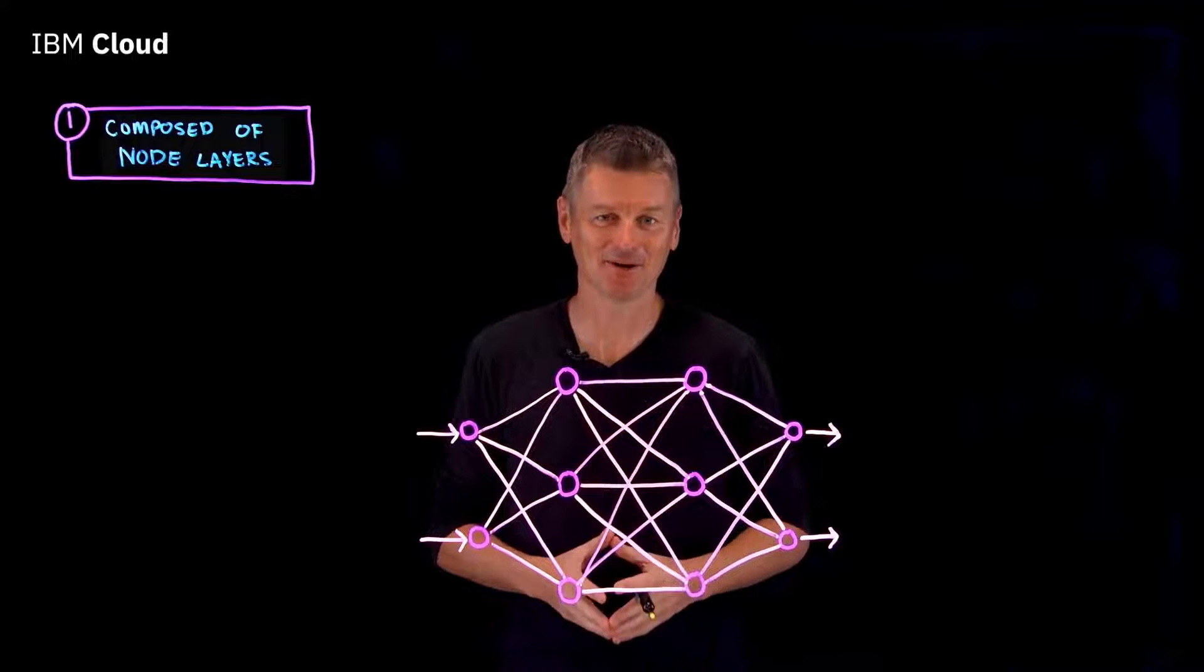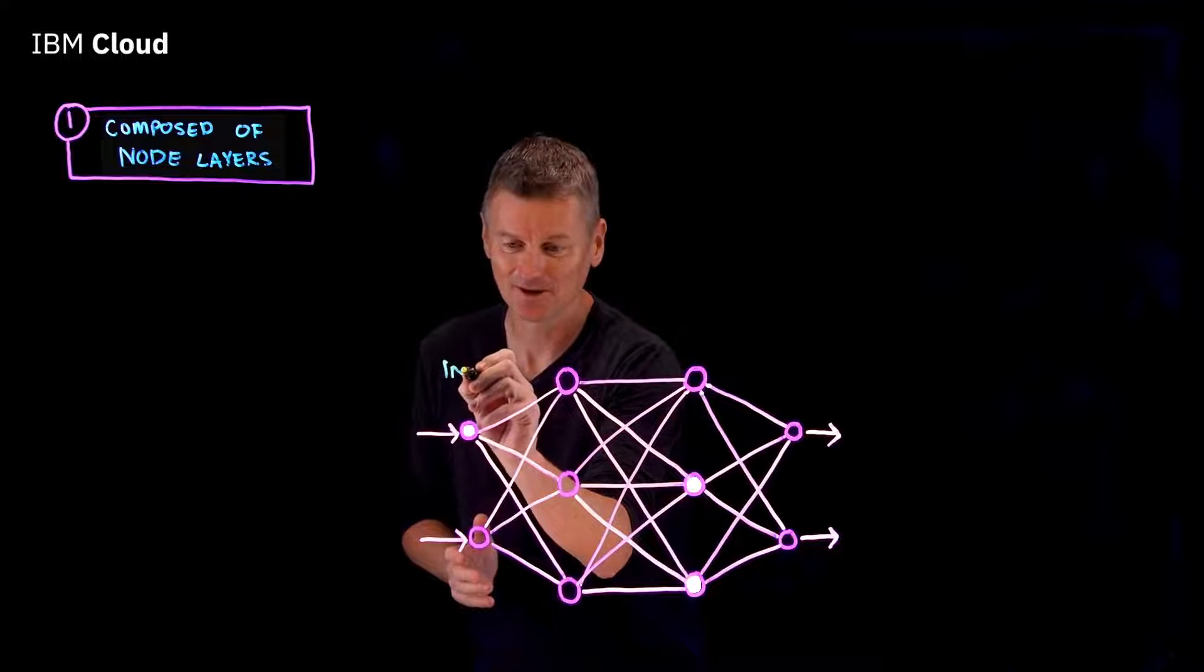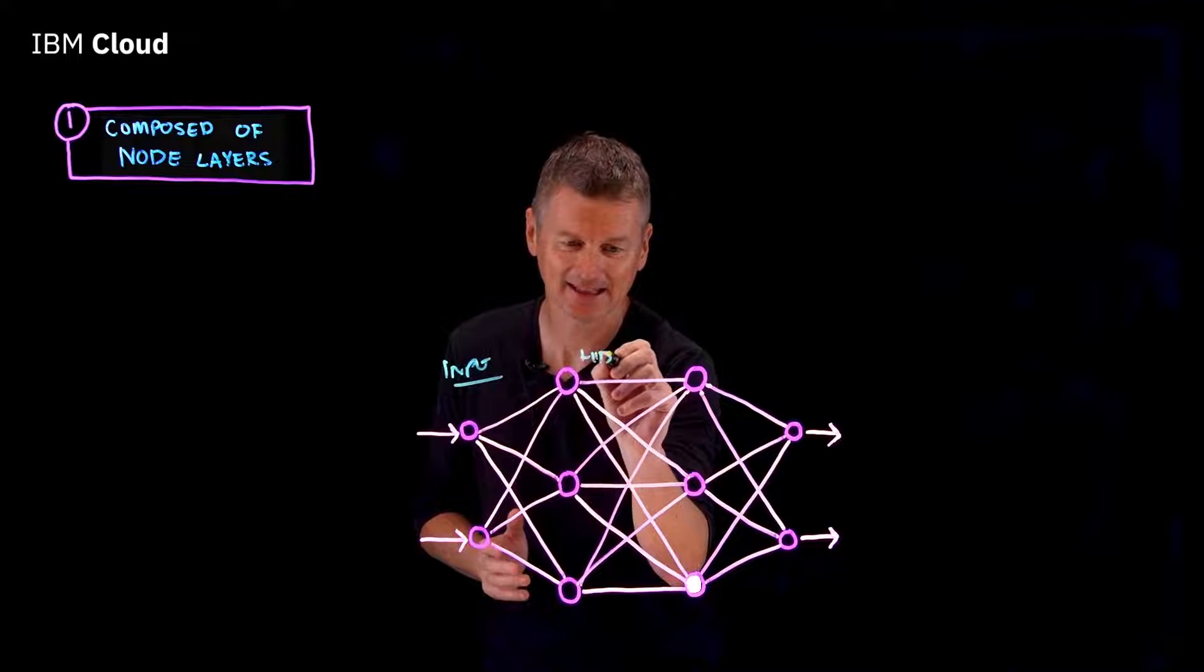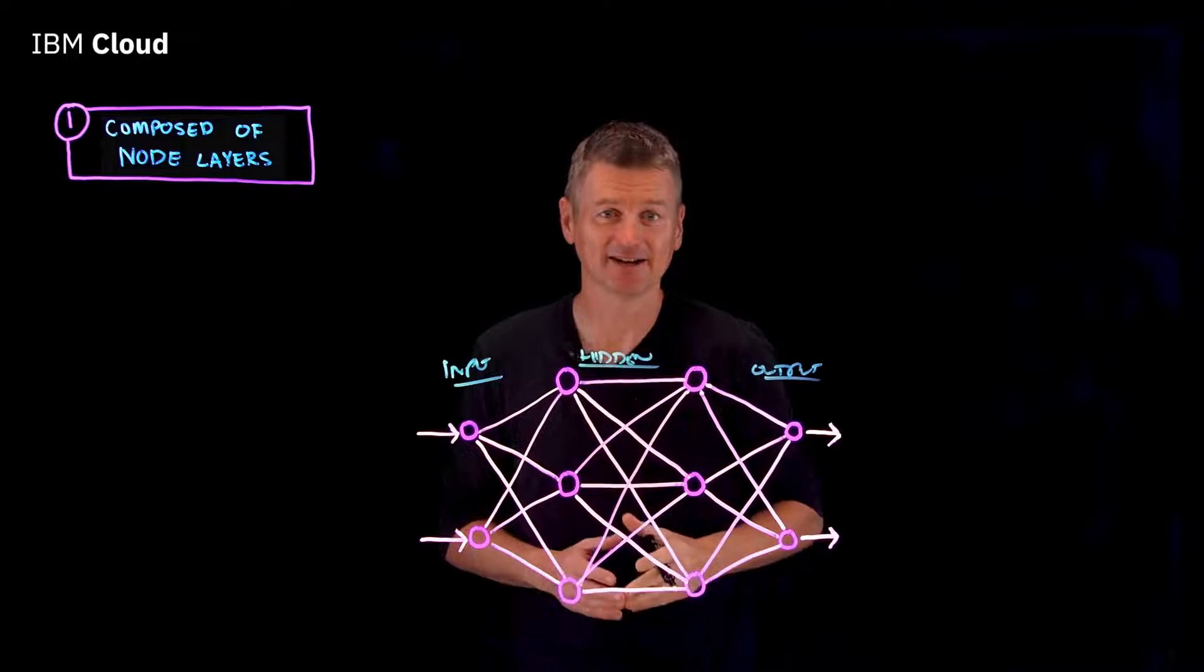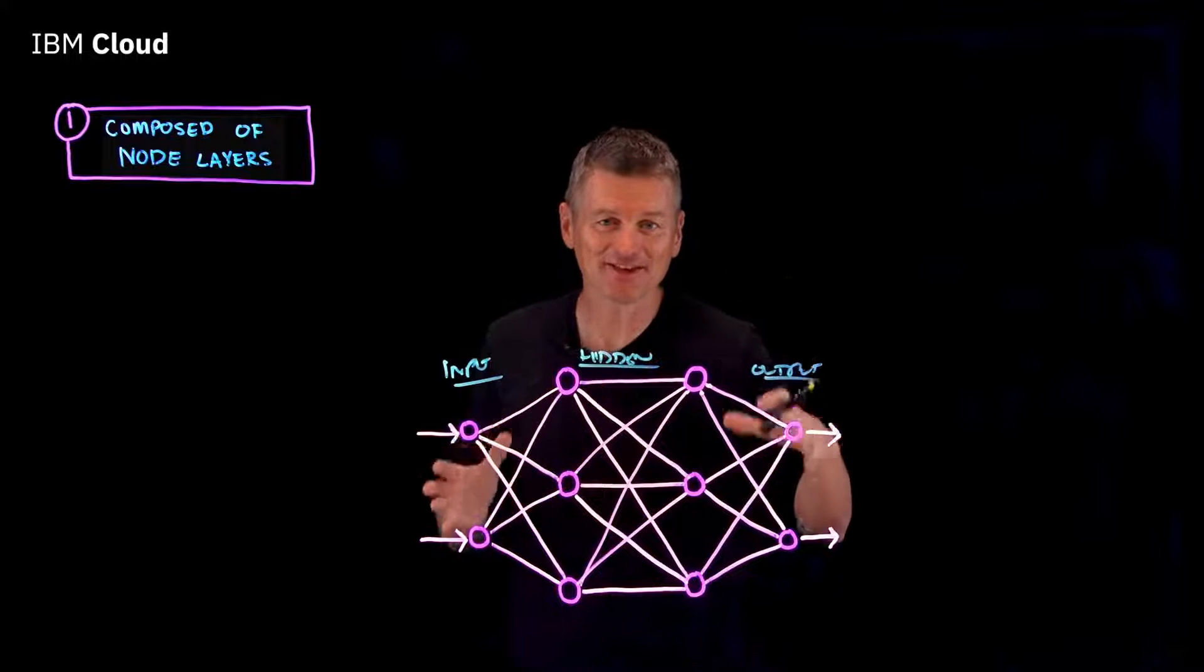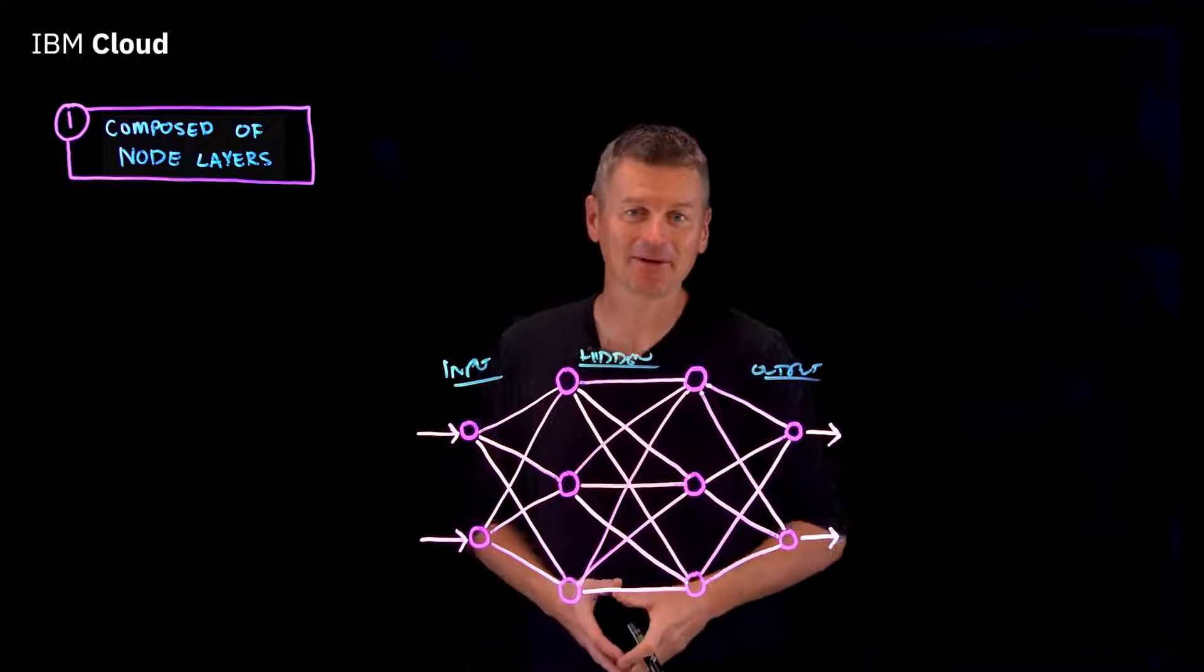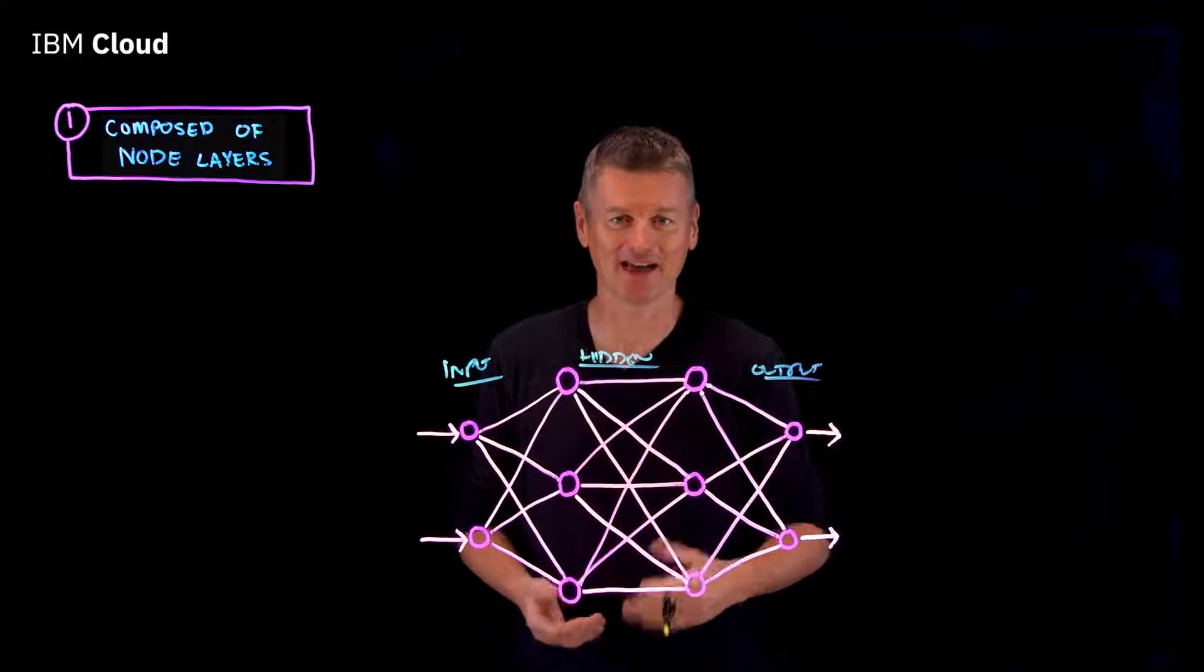neural networks are composed of node layers. There is an input node layer, a hidden layer, and an output layer. These neural networks reflect the behavior of the human brain, allowing computer programs to recognize patterns and solve common problems in the fields of AI and deep learning.